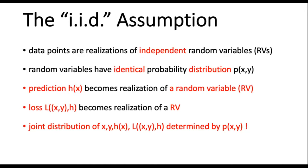As soon as we interpret data points as realizations of random variables, any function of the data points must also become a realization of a random variable. In particular, the predicted label — the function value of the hypothesis — the prediction error, and the loss all become realizations of some random variables. The joint distribution of all these random variables is fully determined by the probability distribution p(x, y).